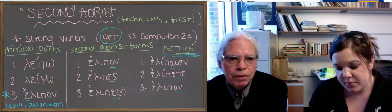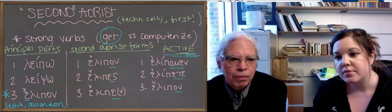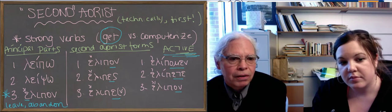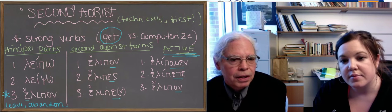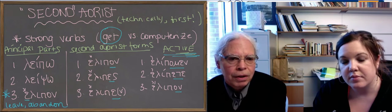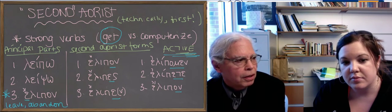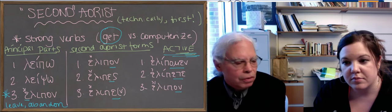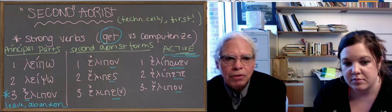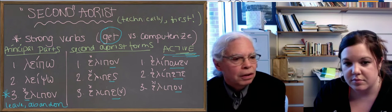What's funny, what differentiates this form from the present is the fact that you've dropped the e vowel. So it's just like get and got or write and wrote. You change the vowel in the stem, it changes the tense of the verb. For us in English, in Greek, it changes the aspect.